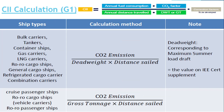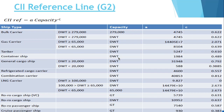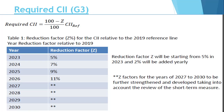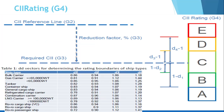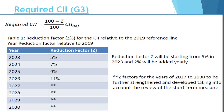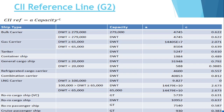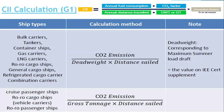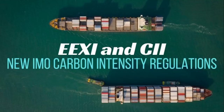To recap: G1 is the calculation of attained CII, G2 is the calculation of the reference line, G3 is the calculation of the required CII, and G4 talks about the CII rating. These are the guidelines published by IMO. Friends, if you have gained something from this video, please do subscribe. If you want to clear the examination and talk to me, please join the membership. Thank you.